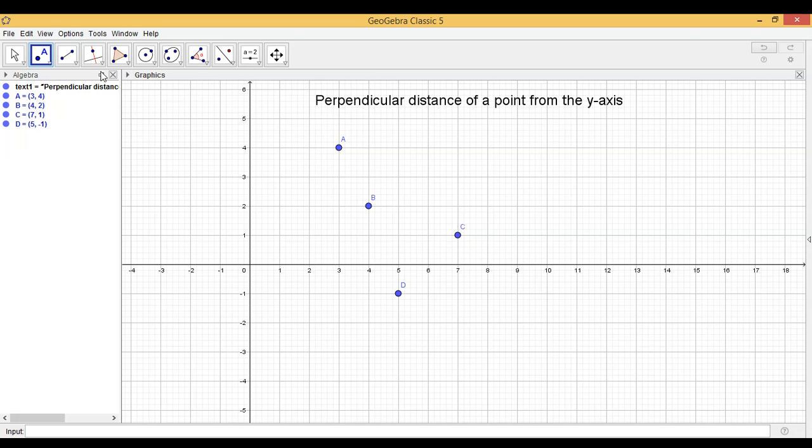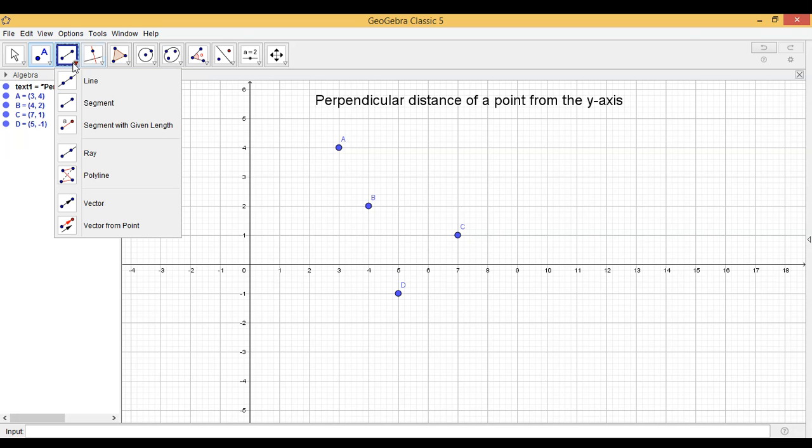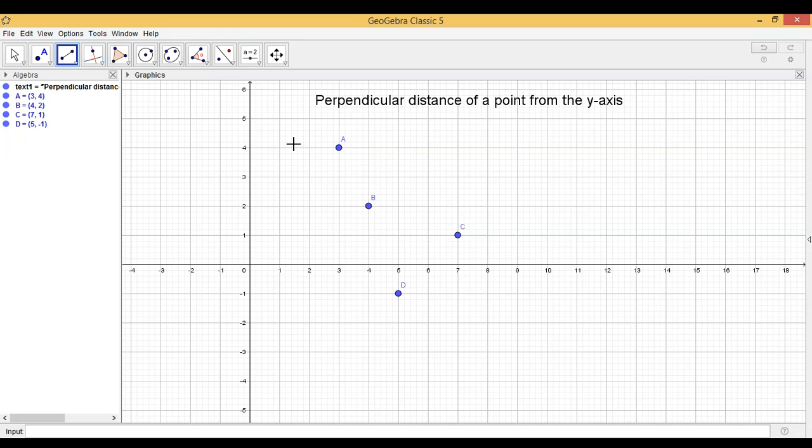So I have to find the perpendicular distance of point A from the y-axis. So what are the coordinates of point A? Observe, it is 3, 4. And perpendicular distance of A from the y-axis is equal to 3 units.